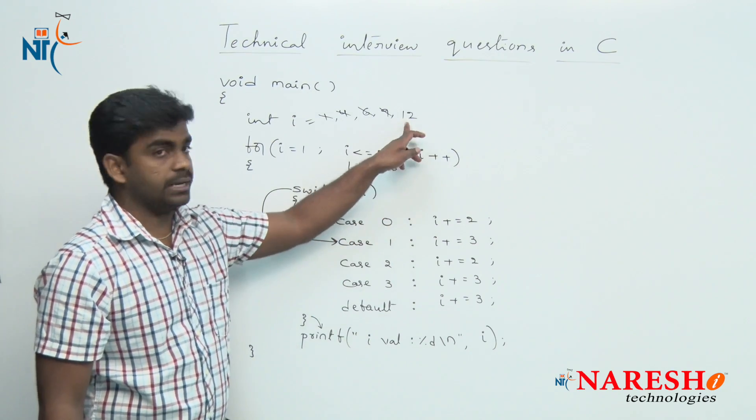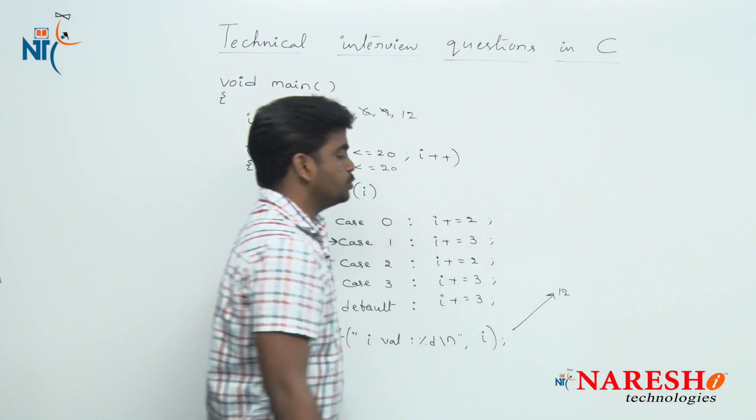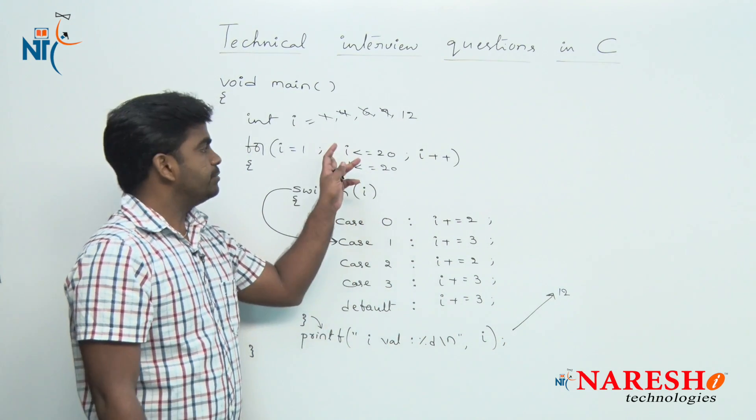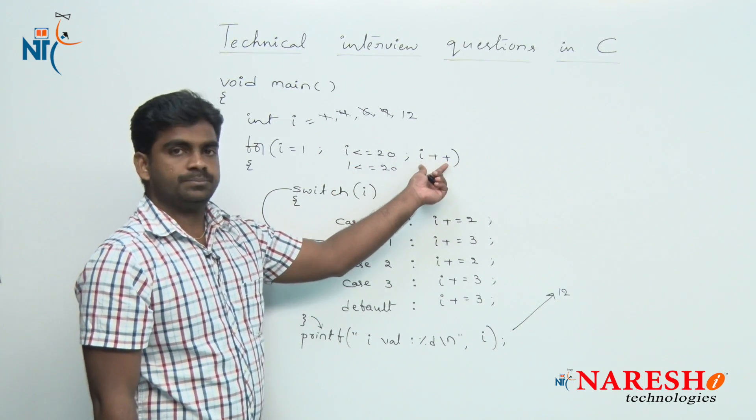What is that i value here? 12. It will print the first time i value 12 after switch case execution. Again for loop condition it will check, but before checking the condition it will modify.